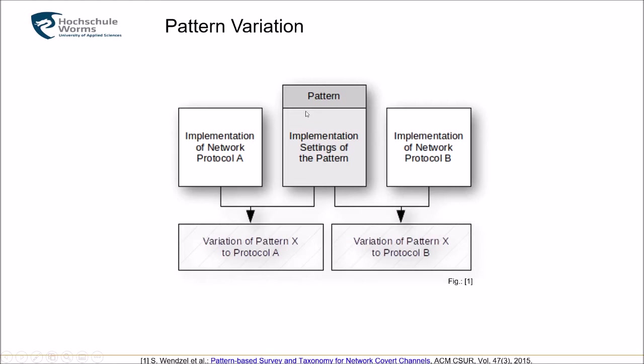The idea is that one pattern describes how we can hide data. We can apply a pattern to different network protocols, so we change the context of where we apply the pattern, and we need some implementation details for a specific protocol. For instance, if we perform data hiding in the least significant bit of the TTL in IP version 4, and want to apply this to the hop limit in IP version 6, which is essentially the same functionality.